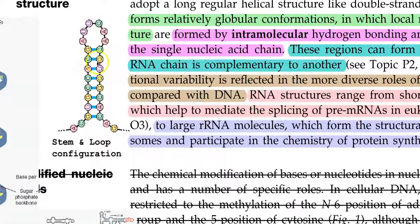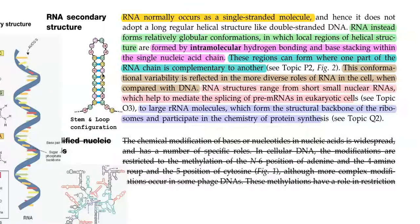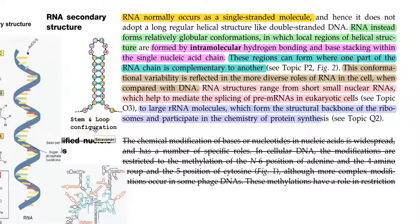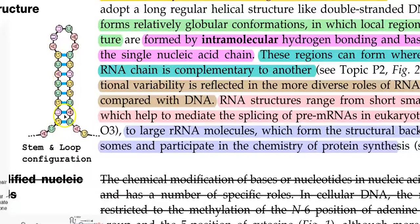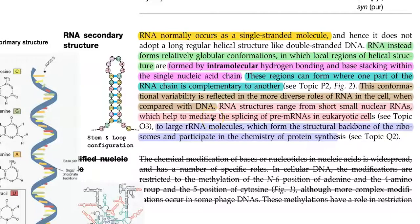GC, GC, AU — this is the intramolecular hydrogen bonding that results in the formation of the secondary structure in RNA. This secondary structure formation is resulted mainly by intramolecular hydrogen bonding, and these regions form where one part of the RNA chain is complementary to the other. That is, this secondary structure has a stem and a loop configuration. The stem structure formation is due to complementarity pairing — AU, GC, GC — and this kind of complementary pairing helps in the formation of a stem and loop configuration in RNA.